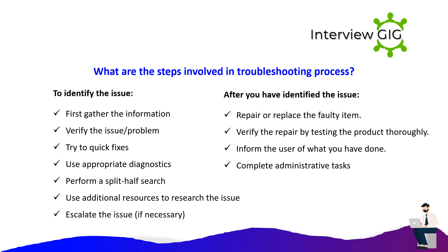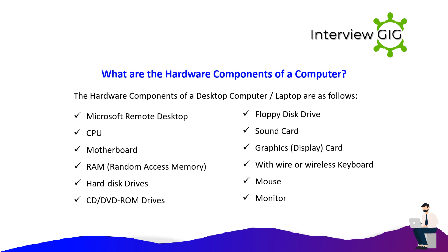What are the steps involved in troubleshooting? First, gather the information and verify the issue. Try quick fixes, use appropriate diagnostics, perform a split-half search, and use additional resources to research the issue. Escalate the issue if necessary. After identifying the issue, repair or replace the faulty item, verify the repair by testing the product thoroughly, inform the user of what you have done, and complete administrative tasks.